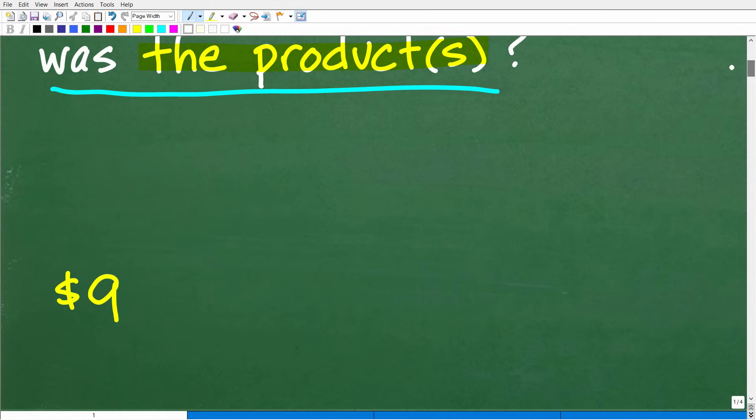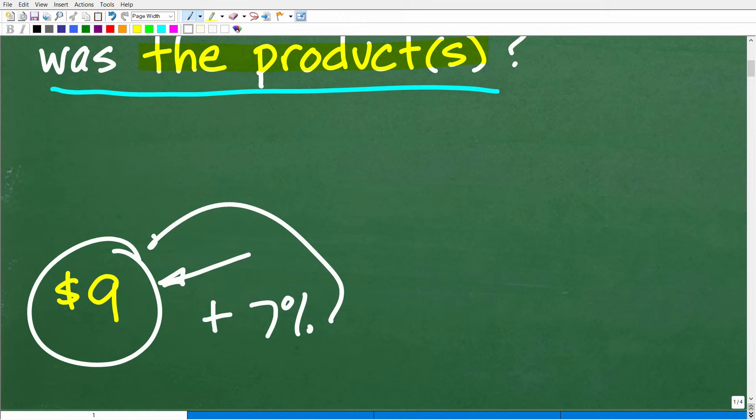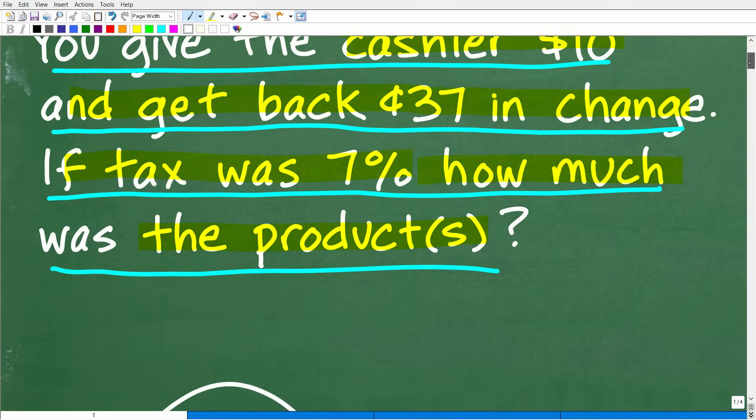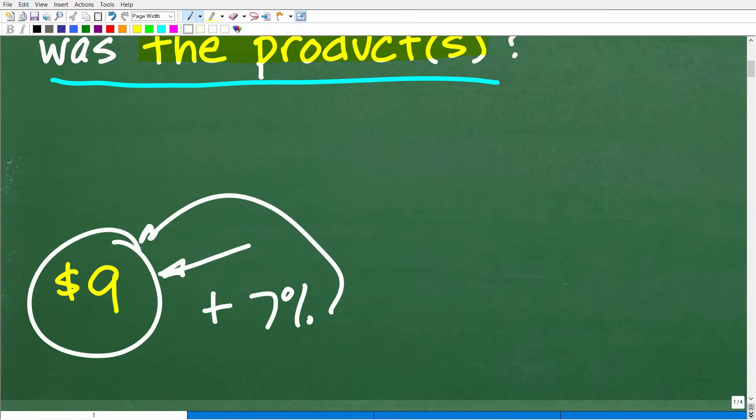The correct answer is $9. Okay, so $9 is what was the cost of the product or two products for, let's say $5 and $4. But we'll just consider we just had one product and it was $9. Now, when we tacked on our 7% on this $9, the total amount is going to be equal to giving the cashier $10 and receiving back $0.37 in change. So, of course, I'm going to walk you through the full solution. But $9 is the correct answer.